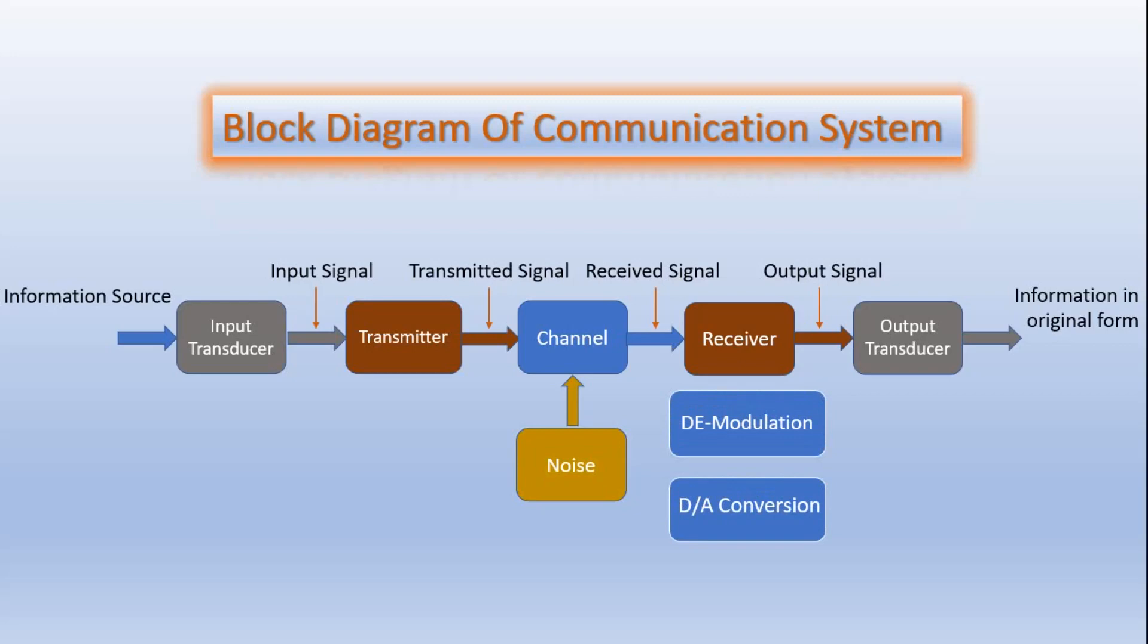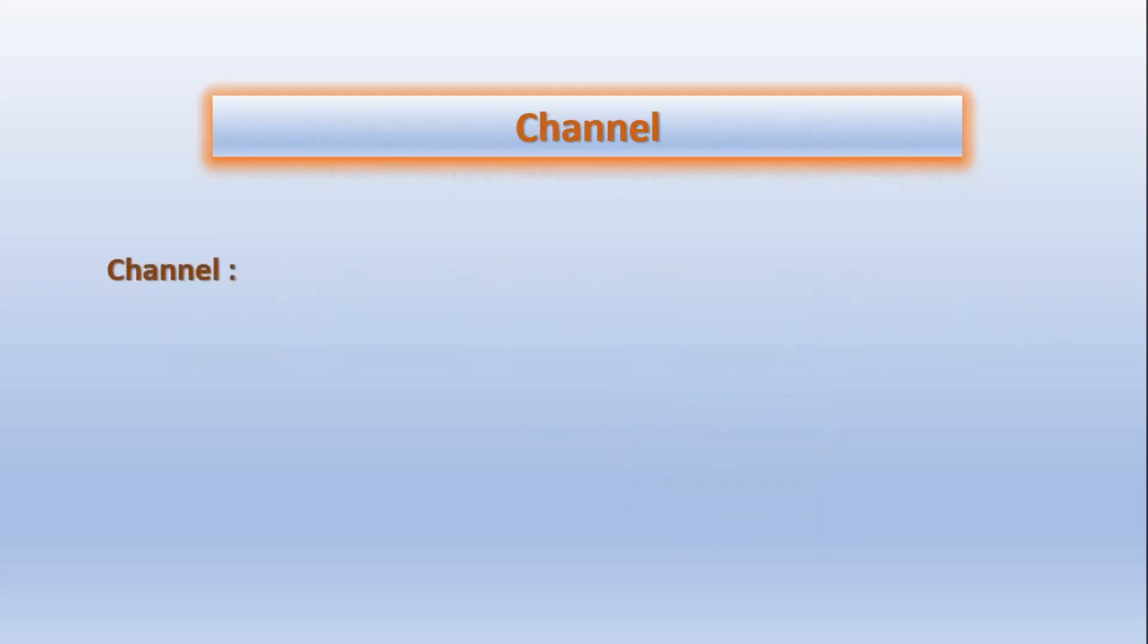For a transmitting medium or for a channel, there are some important specifications. First is bandwidth of the channel. It is the range of frequencies which is supported by the channel. For example, if a particular channel can transmit the signal in a range of 0 to 50 kHz, then we must say that the bandwidth of the channel is 50 kHz.